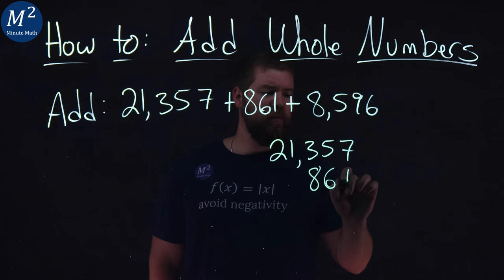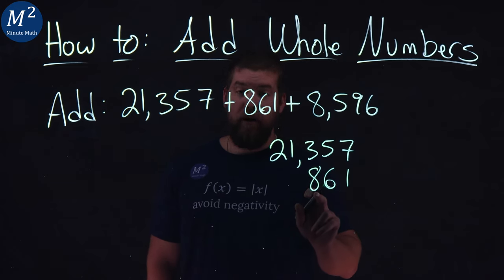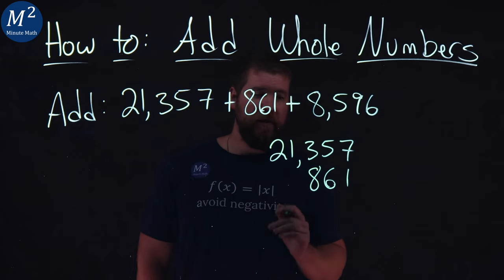So 861, again, 1's place, 10's place, 100's place. That's the key to make sure they line up.